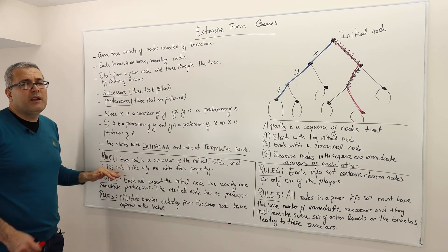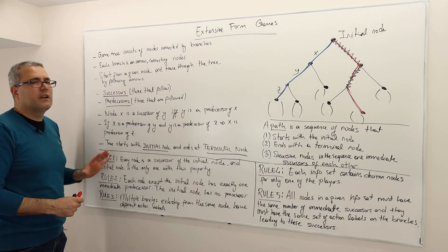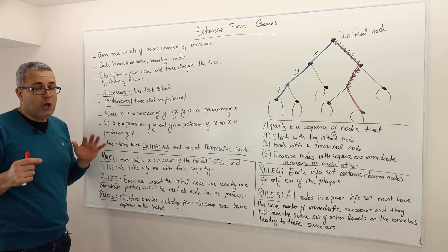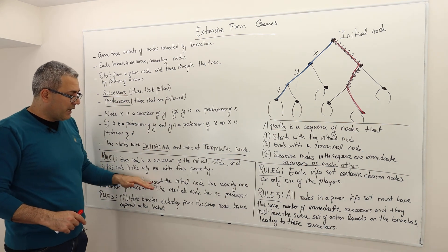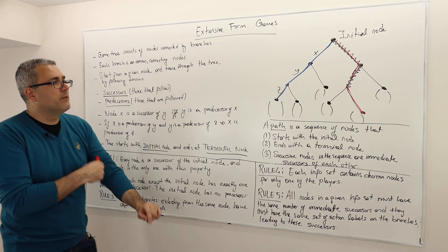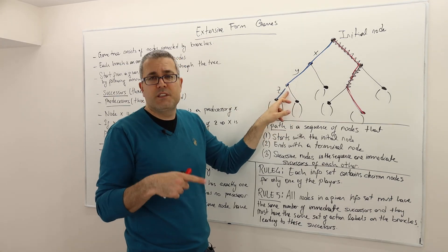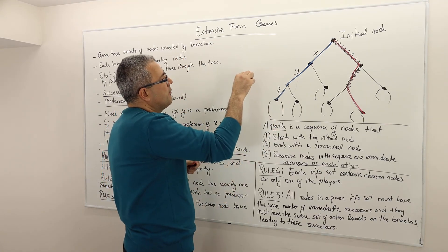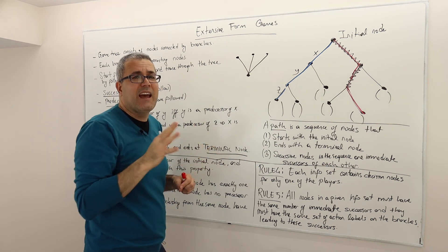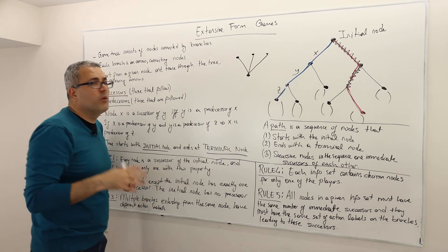Rule number two says each node except the initial node has exactly one immediate predecessor. The initial node has no predecessor. For example, this terminal node has only one immediate predecessor, which is Z. You cannot have a node that has two or three immediate predecessors — that can't happen. Any tree structure satisfying something like that will not be a game tree.